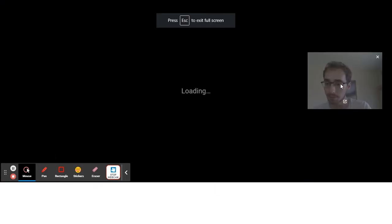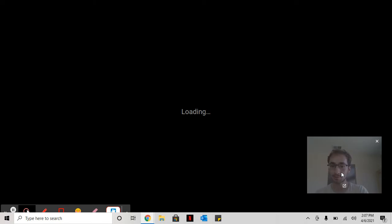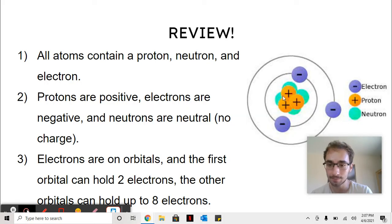So here's some review. Remember, this is what an atom looks like. It has protons and neutrons in the nucleus on the inside. The first two electrons go in the first orbital because it can only fit two. All the other orbitals or rings can fit up to eight electrons.